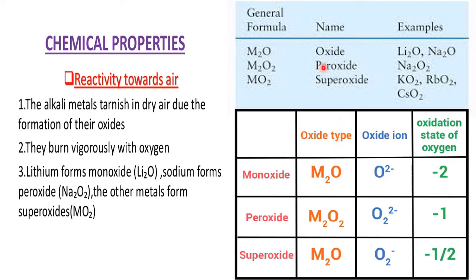If they form peroxide, they will have the peroxide ion O₂²⁻. Normal oxide is O²⁻; peroxide is O₂²⁻. When sodium forms peroxide, the 2− comes to Na, and Na⁺ comes to the peroxide group, so the formula becomes Na₂O₂. So Na₂O is sodium oxide, and Na₂O₂ is sodium peroxide. The peroxide ion is slightly bigger than the oxide ion. They also form superoxide, where the ion formula is O₂⁻.